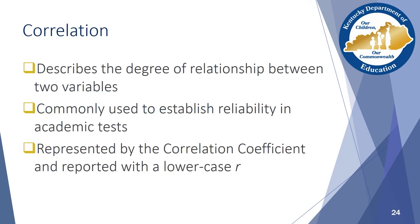Correlation is arguably the most common inferential statistic used in educational research, because it can be used on its own to make an inference about a set of data, or combined with other tests to draw a more concrete conclusion. Correlation describes the degree of relationship between two variables. It is used to answer questions like, is there a relationship between academic achievement in math and student gender, or does household income impact student attendance rates? In addition to these simple comparison questions, correlation is also used to determine the reliability or consistency of academic tests.